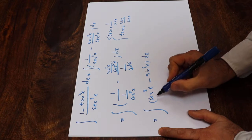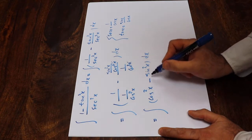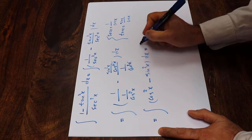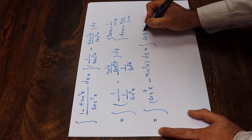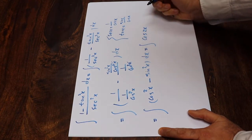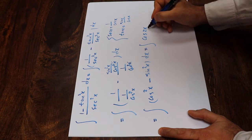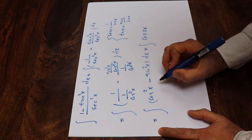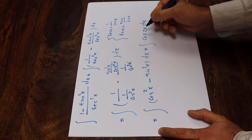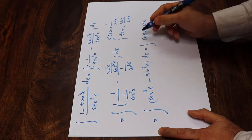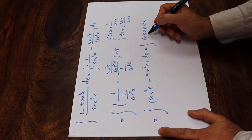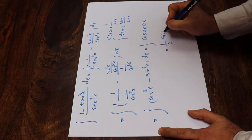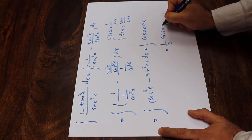And again from trigonometry we know that cosine square x minus sine square x is the definition of cosine 2x. So the definition of cosine 2x is cosine square x minus sine square x. Therefore this becomes the integral of cosine 2x dx, which is equal to 1 divided by 2 times sine 2x plus C.